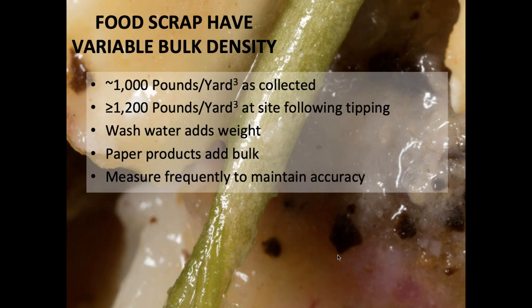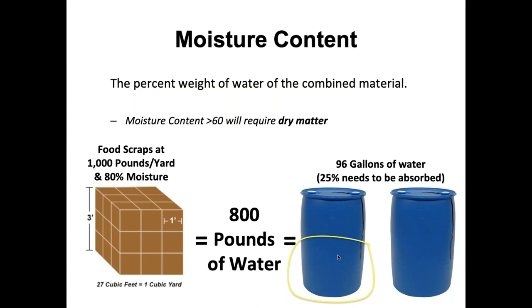I always urge people to be measuring bulk density themselves to get their own bearing, as it affects tipping fees at a compost site both from the collection side and the composter side. Food scraps have a variable bulk density — meat adds weight, age adds weight. If food scraps are 80% moisture, at 1,000 pounds per cubic yard we're talking about 96 gallons of water — nearly two 55-gallon drums.